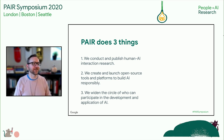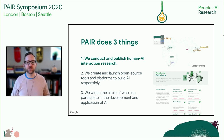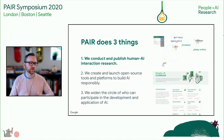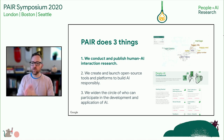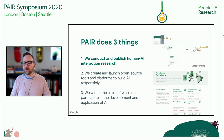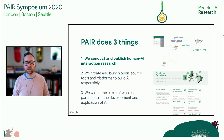A lot of times we get asked what does PAIR do, and I like to say PAIR does three things. The first is we conduct and publish human-AI interaction research. That's the foundation of everything we do. We try to find out new things and publish that either in peer-reviewed academic journals or a few different popular channels, with outputs like work on core embeddings or our People Plus AI guidebook.